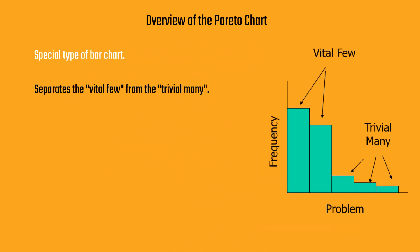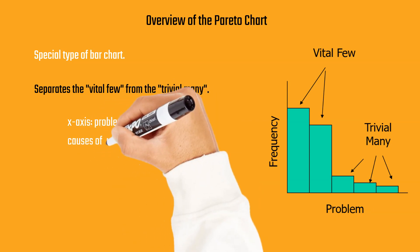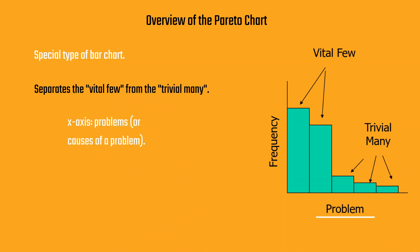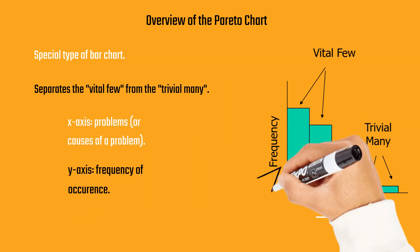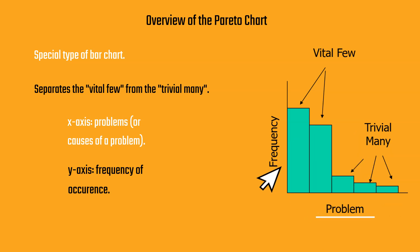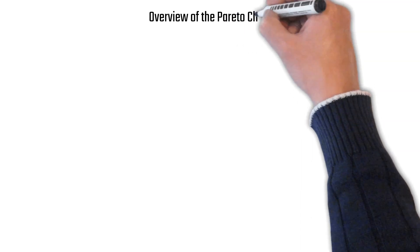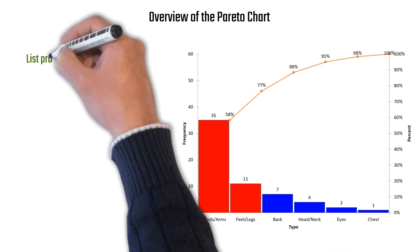The problems are listed on the x-axis and the frequency on the y-axis. Problems are listed in descending order of frequency, so the highest bars — the vital few — are where we should be spending our time. Let's take a look at an overview of a Pareto chart.